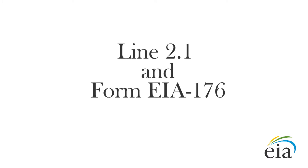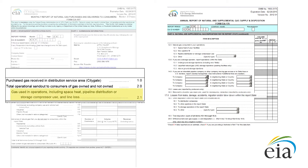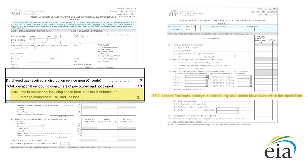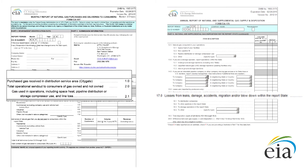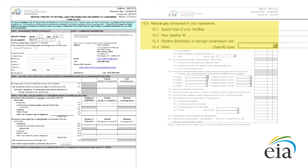Line 2.1 and Form EIA 176. Certain pieces of information you report on Line 2.1 will correspond to information you report on Form EIA 176, the Annual Report of Natural and Supplemental Gas Supply and Disposition. Someone from your company completes the EIA 176 form every year. The sum of the twelve monthly line loss volumes reported for Line 2.1 in EIA 857 should be the same as the line loss volume you report on Line 17 of the EIA 176 form. The numbers you use for space heat and distribution should match the volumes reported on EIA 176's Lines 12.1 through 12.4.